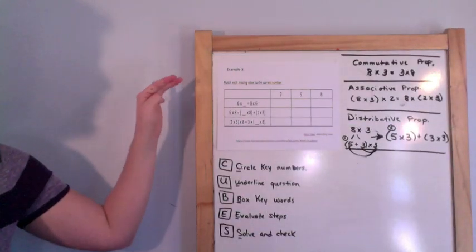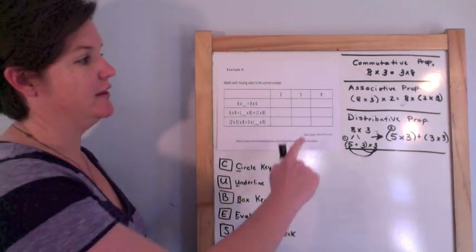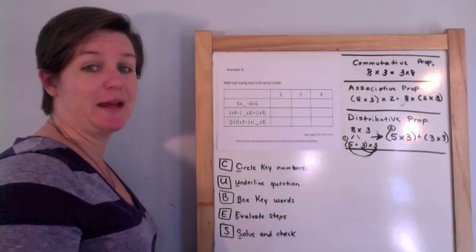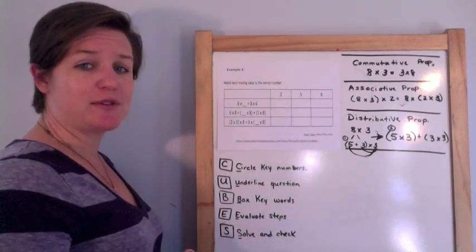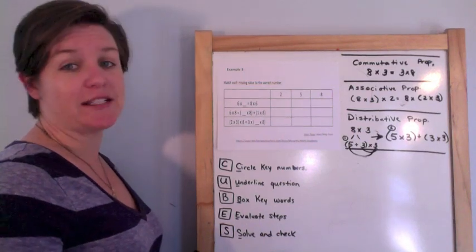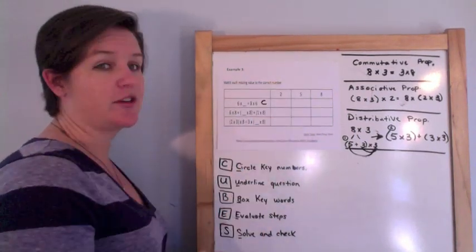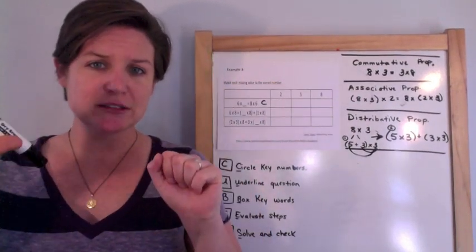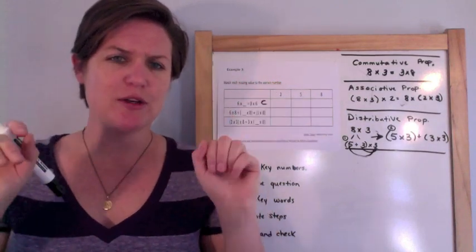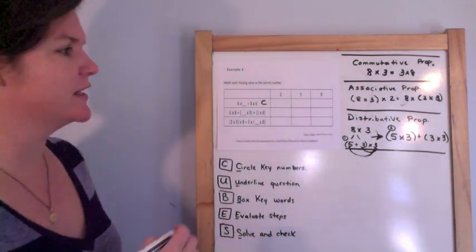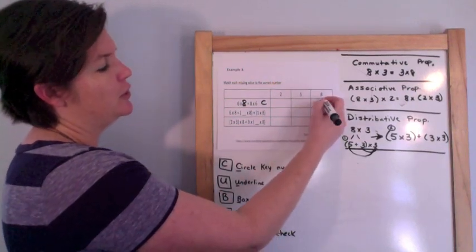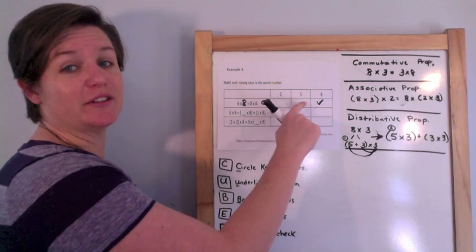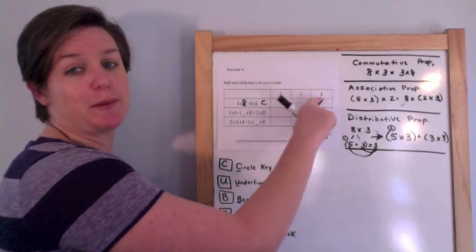So we have our equations here, and then we have numbers, and we have to match what belongs in the empty space. Here I see 6 times what equals 8 times 6. Well, this looks like the commutative property — 6 times what equals 8 times 6. What goes in this blank? It's an 8. So I'm going to put a little check-a-roo right there on the 8. Just put it where it goes. The 8 should go there — that's my match.